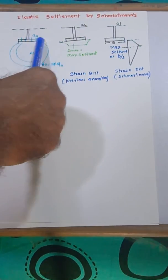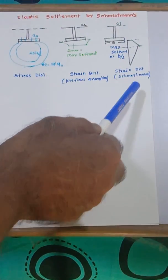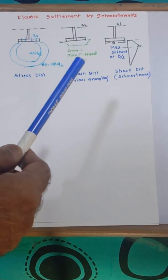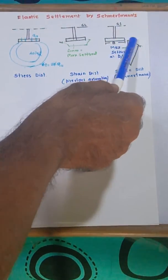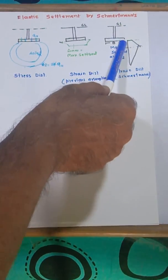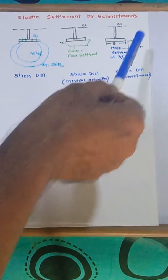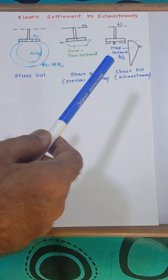But according to the Schmertmann method, you'll find that what he proved in 1970 is that the settlement is not maximum at the contact surface, but it is at a certain distance below, which is say at B by 2 for a circular or a square footing.